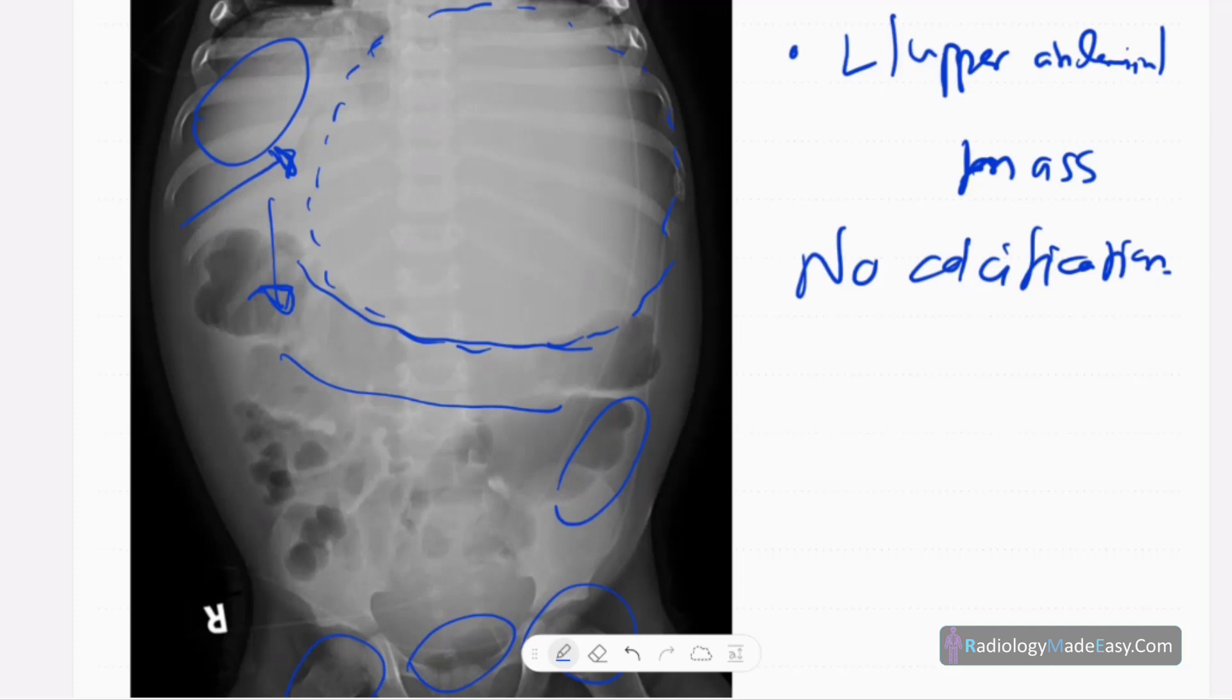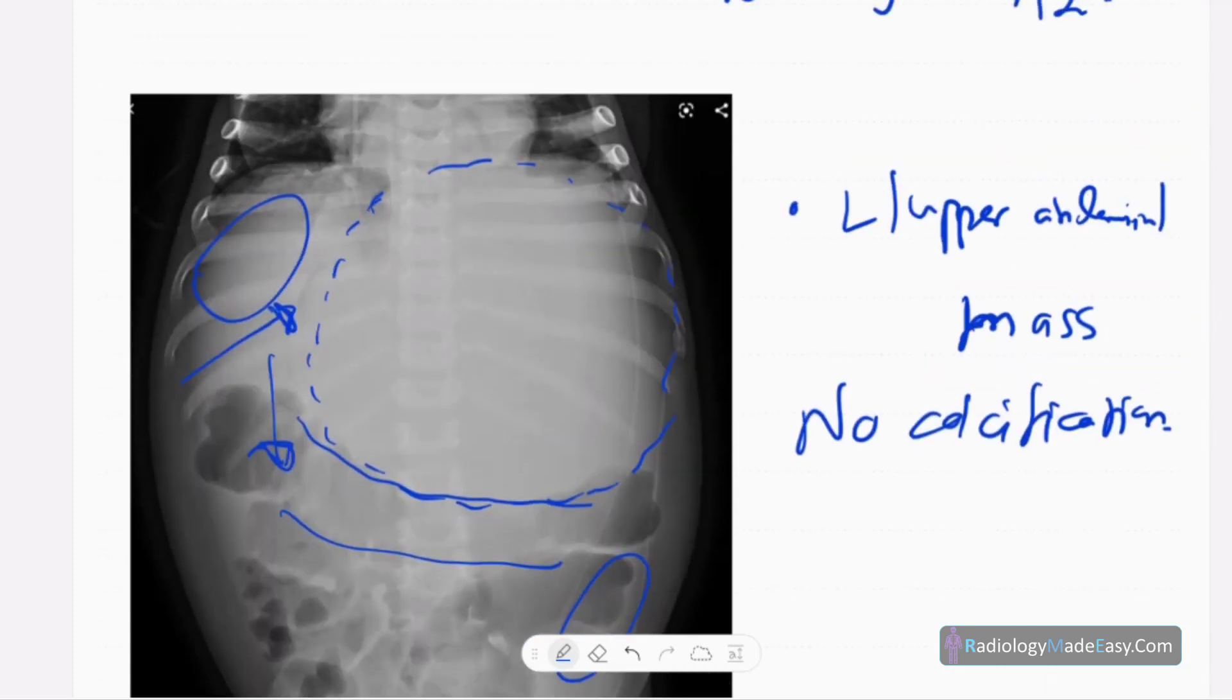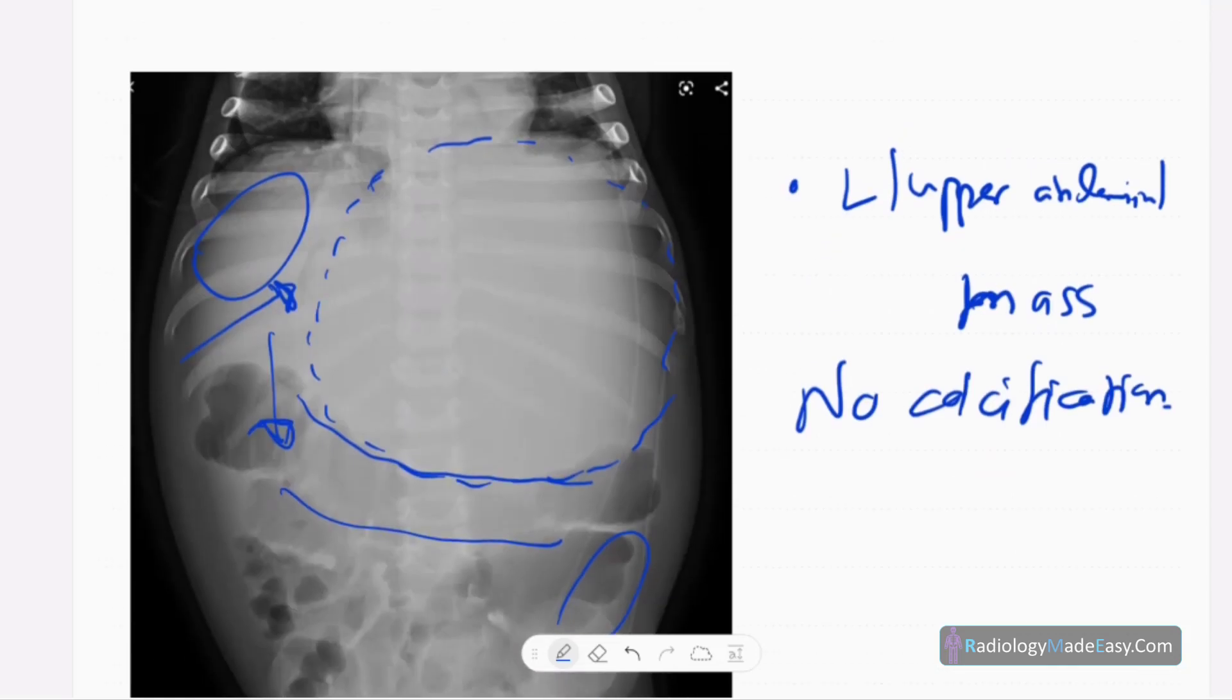So you have to look for the calcifications. Usually neuroblastoma, you can see 30 percent calcification in x-ray, but once you do CT, there's about 80 to 90 percent calcifications. And Wilms tumor, there's about 10 percent calcifications.